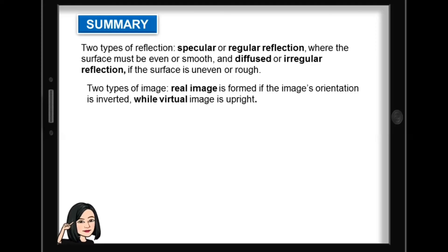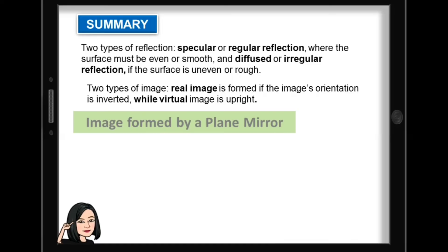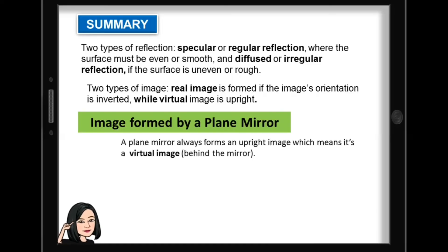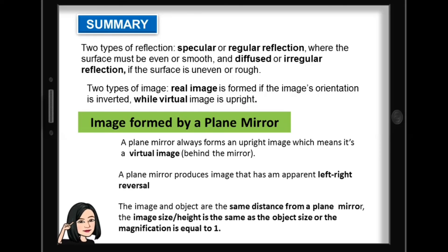There are two types of image: a real image is formed if the image orientation is inverted, while a virtual image is upright. The characteristics of the image formed by a plane mirror are: it always forms an upright virtual image behind the mirror; it produces an image with apparent left-right reversal; the image and object are the same distance from the mirror; and the image size is the same as the object, so the magnification is equal to one.